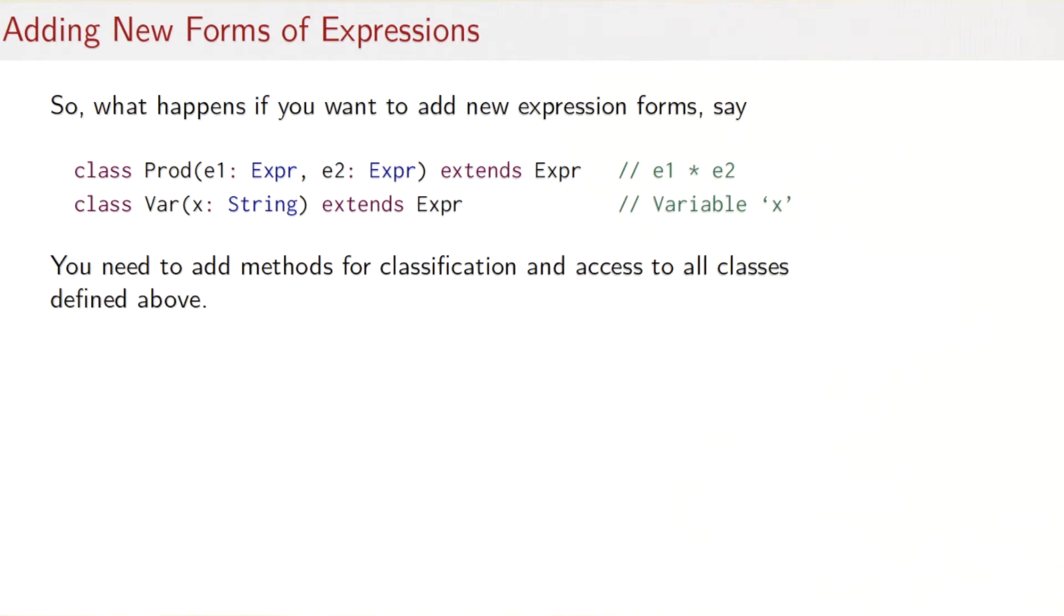So let's demonstrate that. Let's say we want to add to our expression trees two new classes. One that represents the product of two expressions E1 and E2. So E1 times E2 would be a class Product given arguments E1 and E2. And the other new class would be Var that represents variables. So variables would take a string that represents their name. So if we wanted to continue with our scheme of classification and access methods, then we'd need to add new methods to, of course, those two new classes, but also to all the classes defined above.